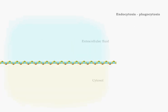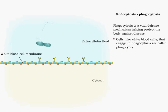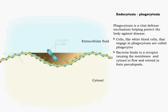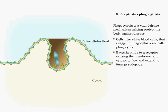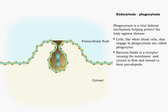Phagocytosis is a common form of endocytosis and part of a vital defense system protecting the body from disease. Large particles, like bacteria, bind to a receptor causing the membrane to extend to form pseudopods, which then surround the bacteria forming a vesicle called a phagosome.